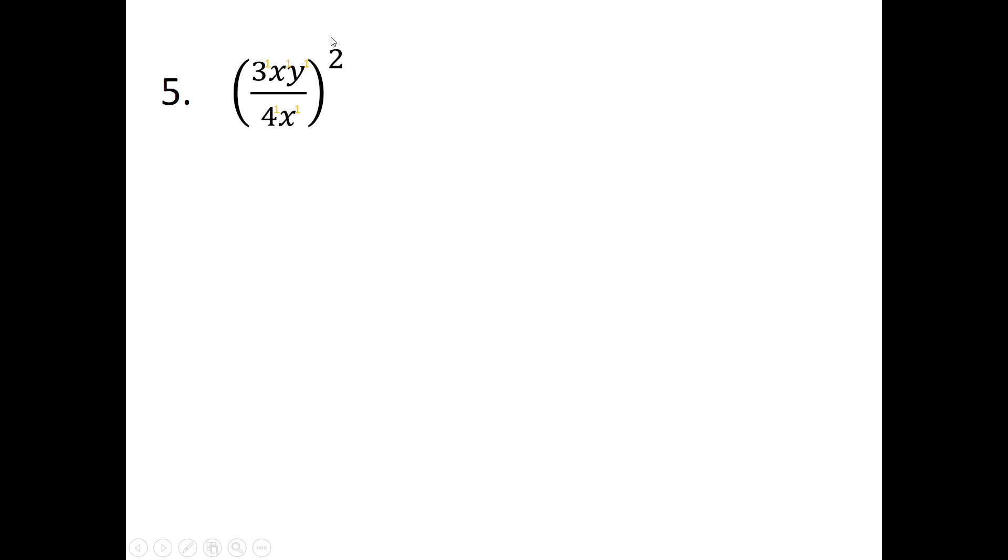So I'm going to get 3 squared, x squared, y squared over 4 squared, x squared. The 3 squared and the 4 squared you can simplify. And from there, you can cancel out your x squareds to get your final answer. Cool. So that's basically everything.